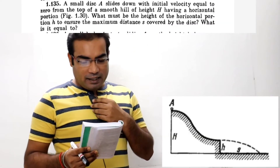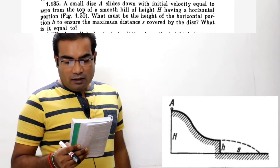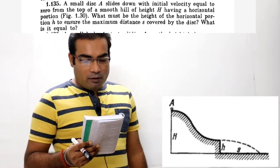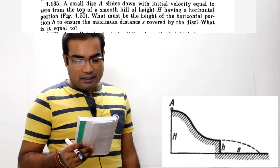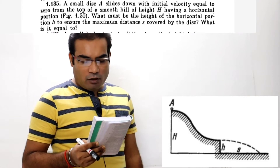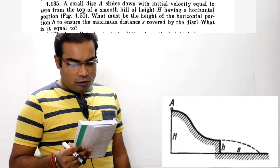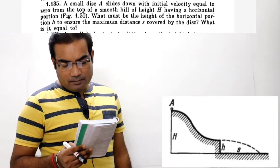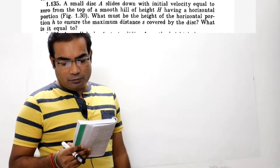Hello everyone, this is Sujit Kumar Jha and this lecture video is going to solve question 135. A small disc A slides down with initial velocity equal to 0 from the top of a smooth hill of height H having a horizontal portion. What must be the height of the horizontal portion h to ensure the maximum distance S covered by the disc? What is it equal to?